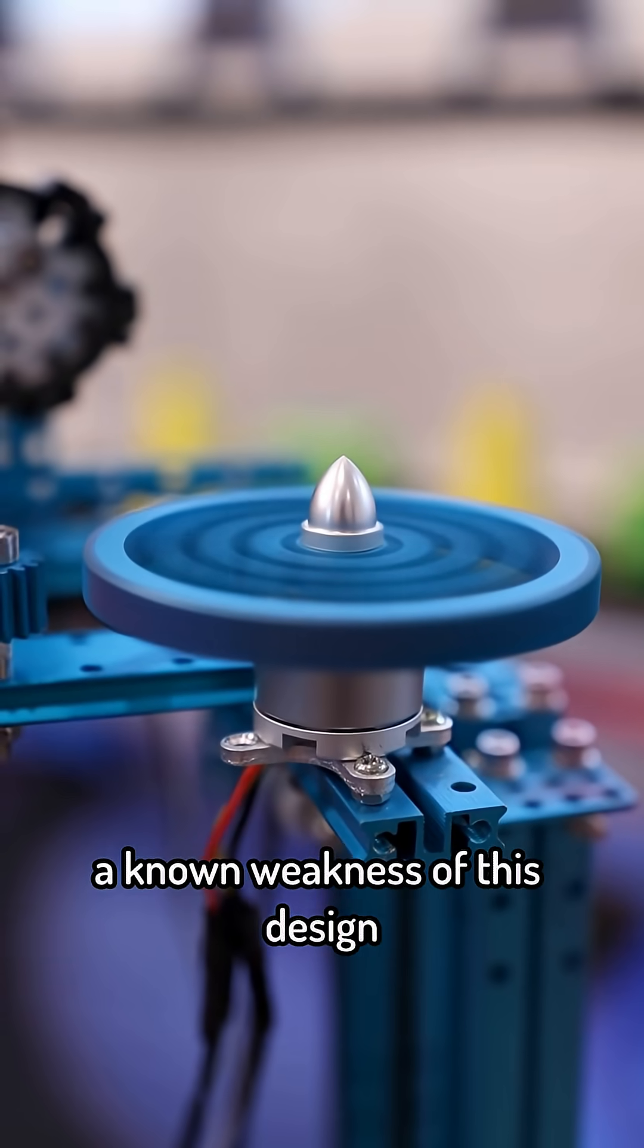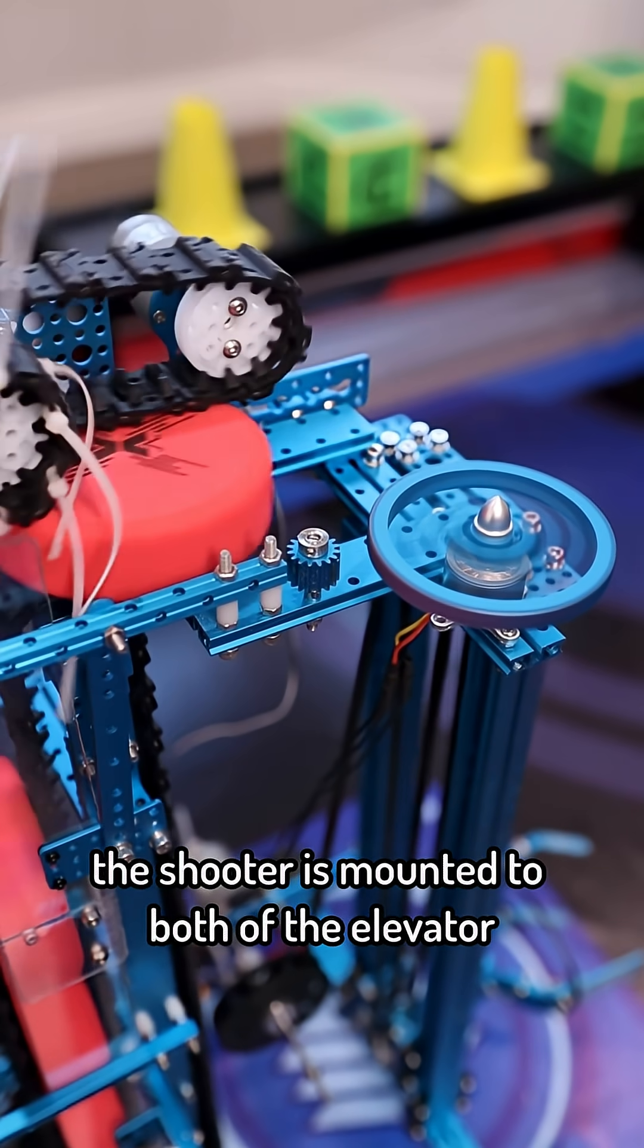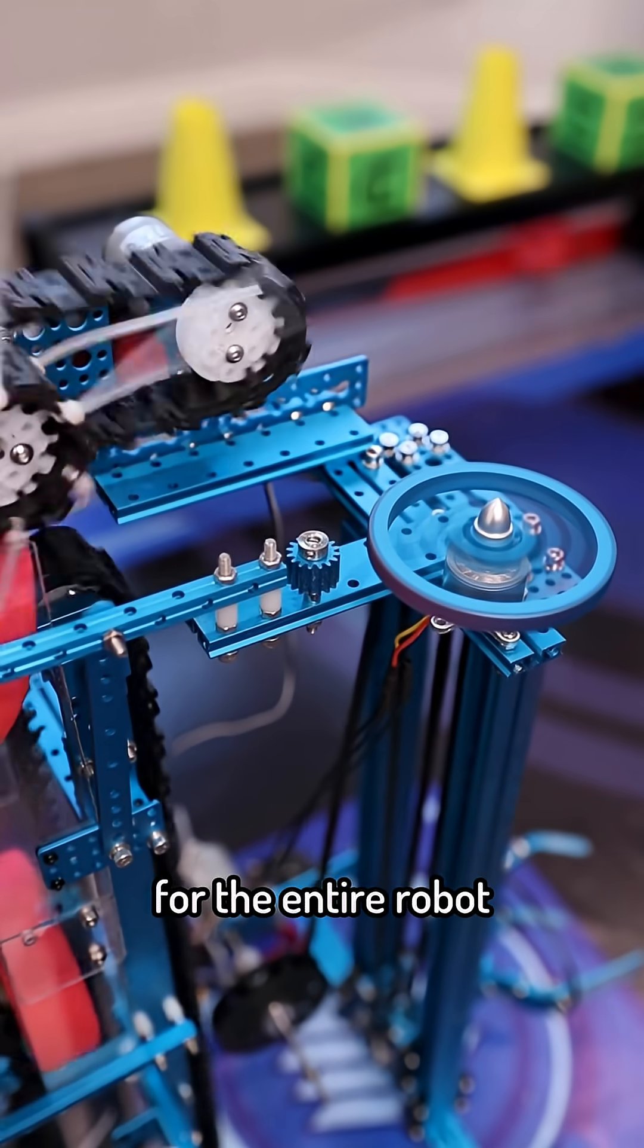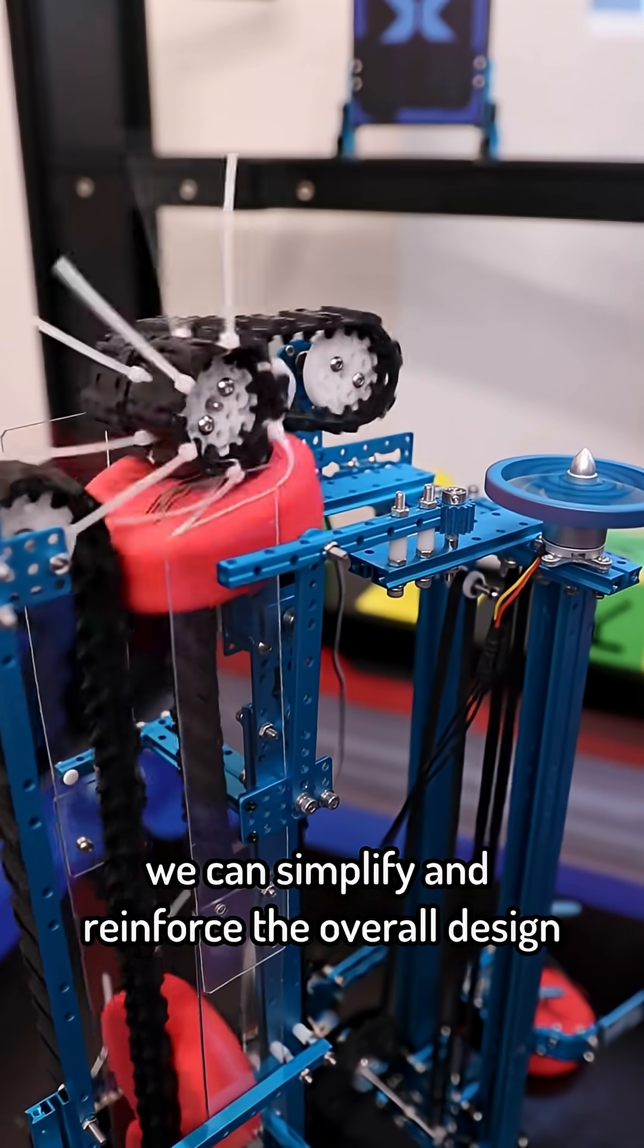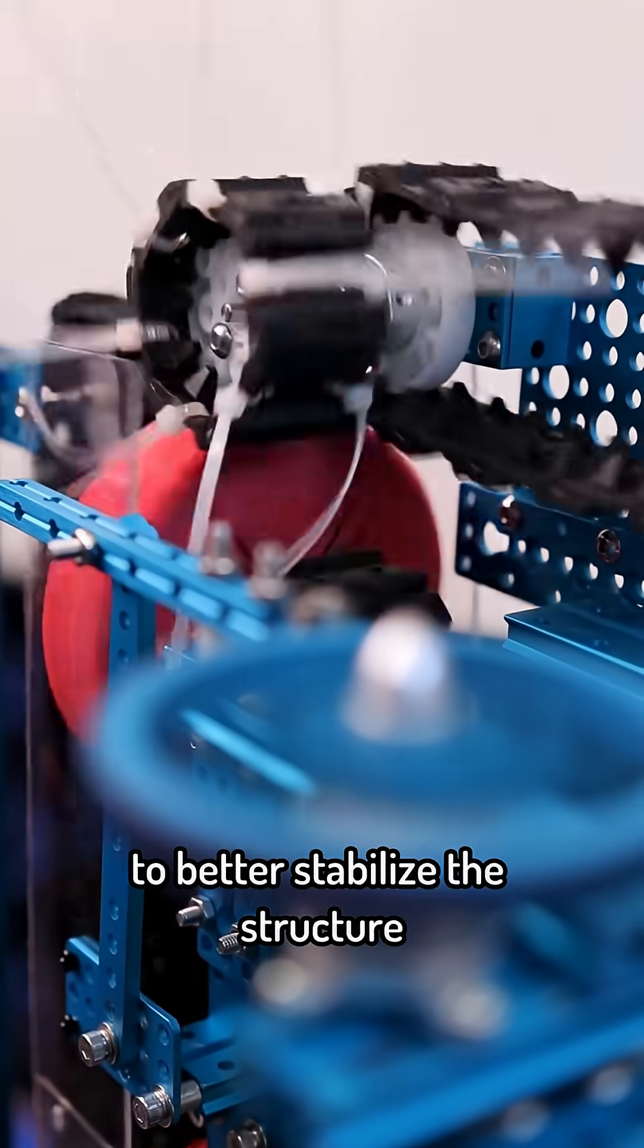A known weakness of this design is the structural mounting. The shooter is mounted to both the elevator and the uptake mechanism, which doesn't provide enough rigidity for the entire robot. To improve this, we can simplify and reinforce the overall design. We can also custom 3D print mounting components to better stabilize the structure.